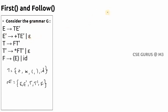First, for any terminal, the First set is the terminal itself — nothing changes. For example, First(+) is just plus, First(*) is star, First('(') is open brace, First(')') is close brace, and First(id) is id. So we mainly need to find First sets for non-terminals, which is what's actually used in the predictive parsing process.